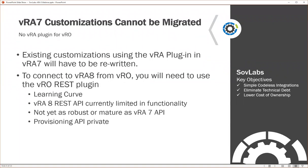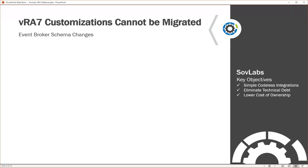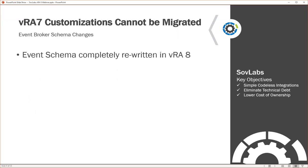The provisioning API in VRA 8 is private, so as of today you can't get access to it, which poses some challenges. Looking at the event broker in VRA 7, there have been schema changes in VRA 8 — it's essentially been completely rewritten. The schema you may have built your integrations around for VRA 7 is no longer the same, which means those integrations you have today will need to be rewritten.